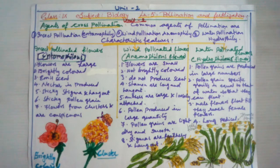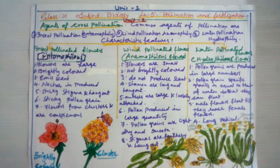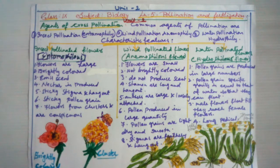Now we are moving to the agents of cross-pollination. The two commonest agents of cross-pollination are insects and wind. But in some cases, flowers are pollinated by certain animals like birds, squirrels, bats, and elephants. Sometimes even by water — aquatic plants and hydrophytes get pollinated by water as well. Each category of flowers has some special features to maximize the chance of pollination.